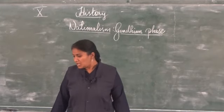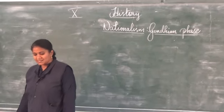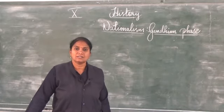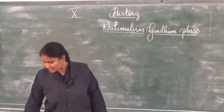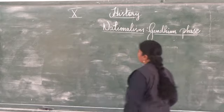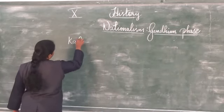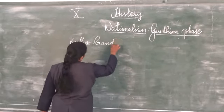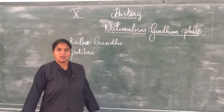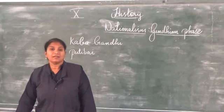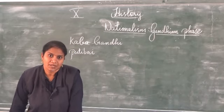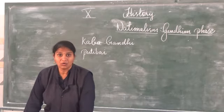Now let's see Gandhiji and mass nationalism. The evolution of Gandhiji: his full name was Mohandas Karamchand Gandhi. His father's name was Kaba Gandhi and his mother's name was Putlibai. He was much influenced by his mother. He was born in Gujarat. Kaba Gandhi was the Diwan of Rajkot, so Gandhi was born and brought up from a well-to-do family.